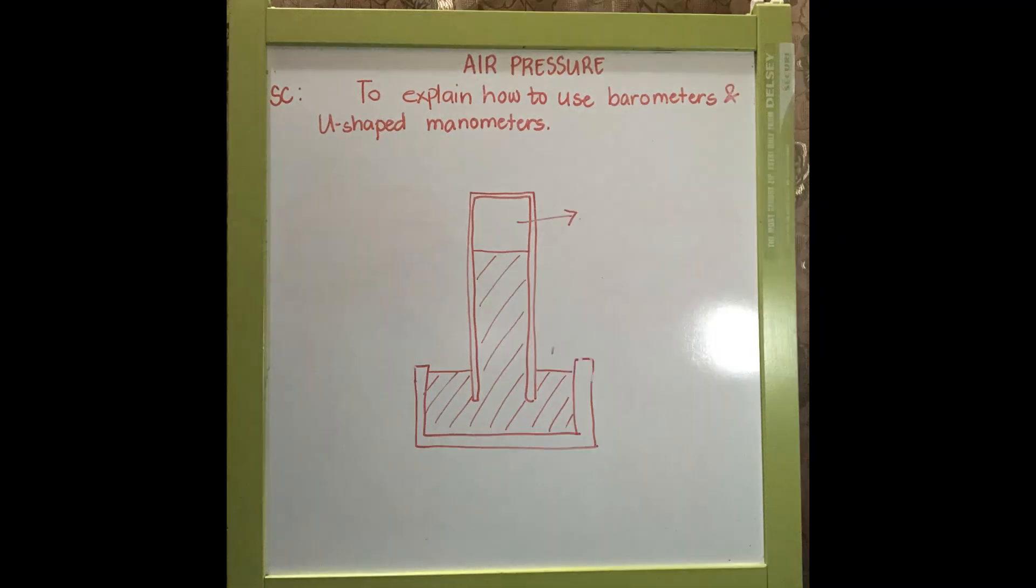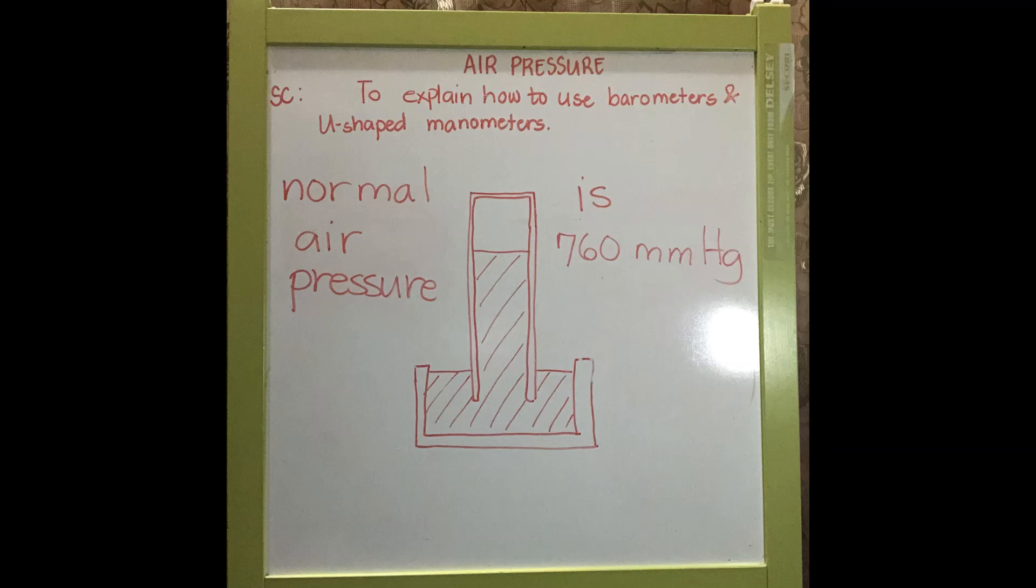This space over here is a vacuum. There should be no air bubbles inside the space otherwise it will affect your reading of the air pressure. The air bubbles will exert a force opposing the air pressure thereby giving you wrong data. The normal air pressure is approximately 760 mm of mercury or 76 cm of mercury.